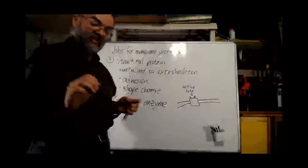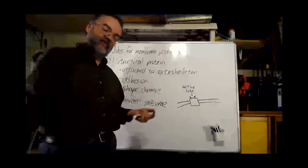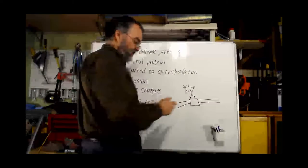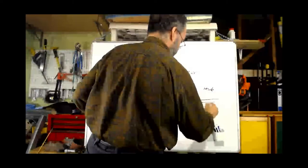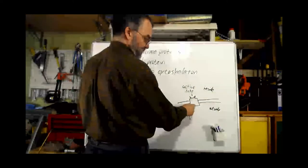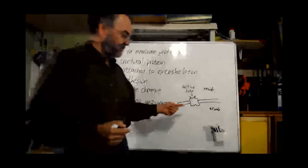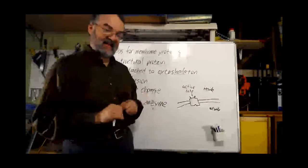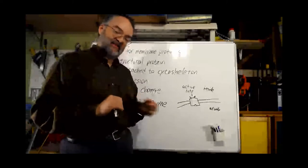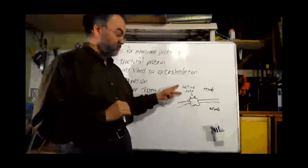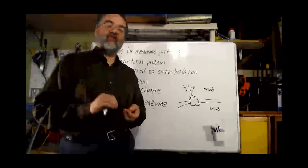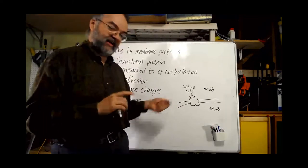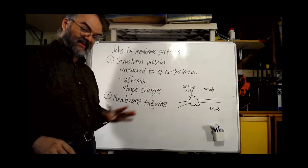When we talked about enzyme regulation, we talked about how many enzymes have regulatory sites where some other molecule can bind and cause that enzyme to work better or worse. So let's imagine we have a membrane enzyme where the active site faces inside the cell and a regulatory site faces outside. A regulatory molecule outside the cell can cause this enzyme to catalyze or not catalyze its reaction inside the cell. That means the presence of some molecule outside the cell changes what's going on inside — that starts to sound like information coming in from outside.